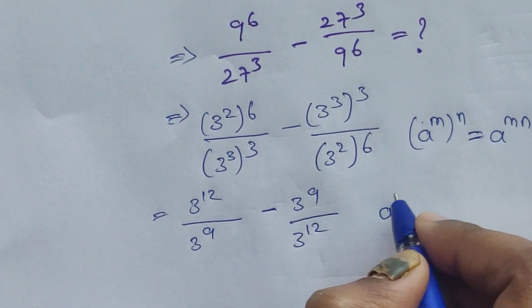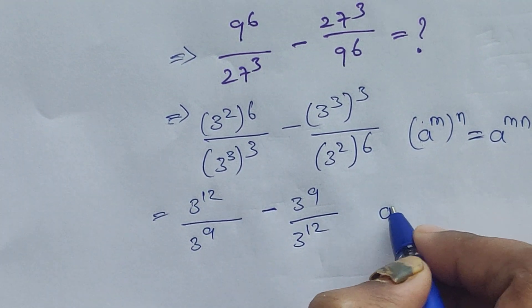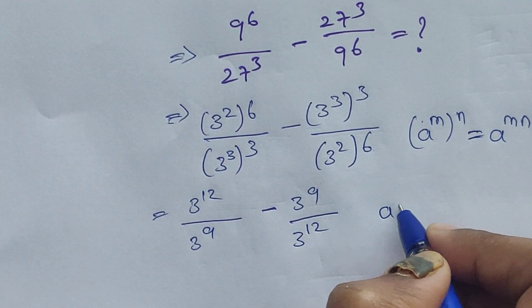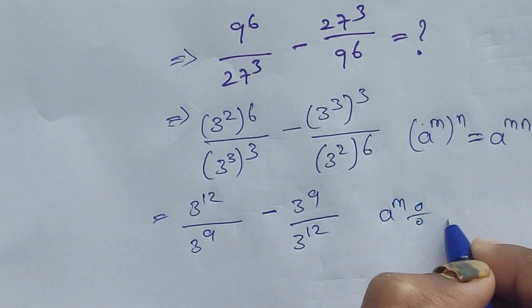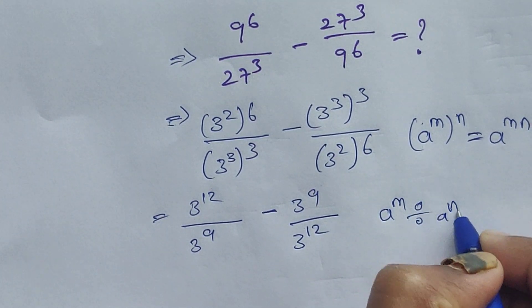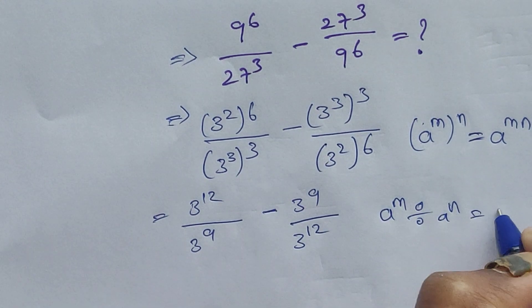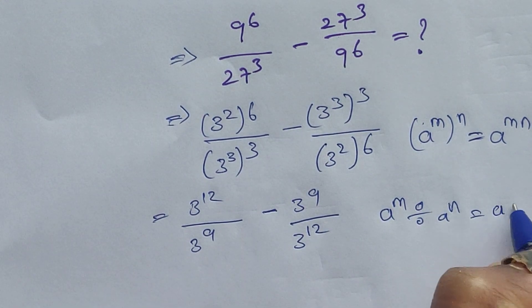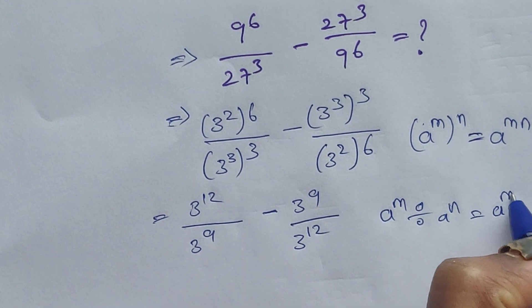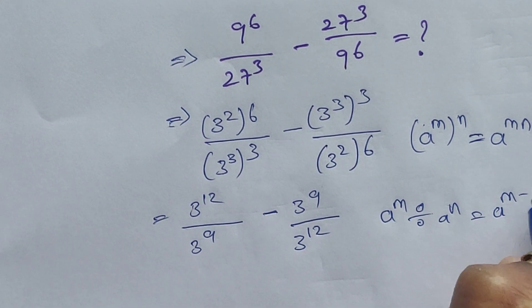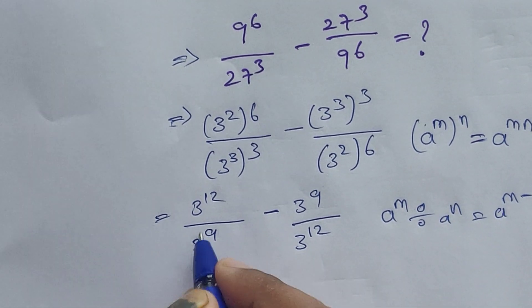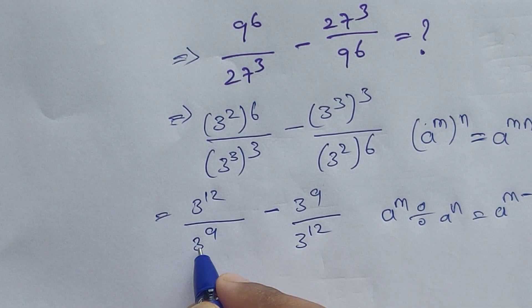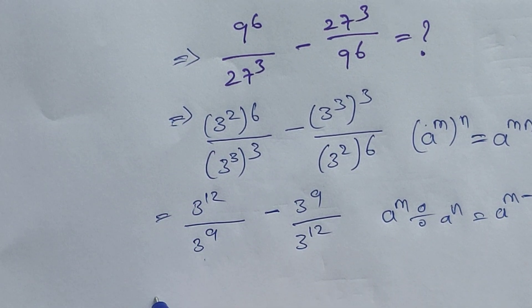Now I am going to apply one more formula: a^m divided by a^n equals a^(m−n). Applying this formula to both terms — this is a over b form.